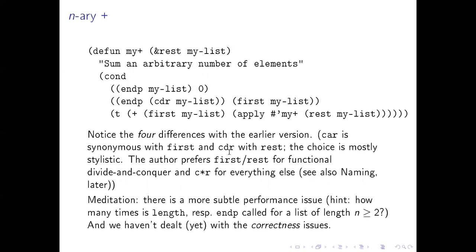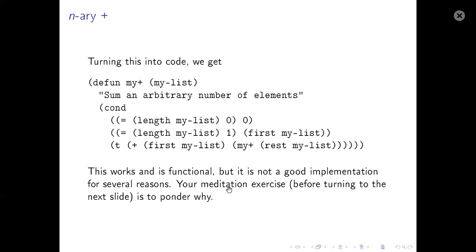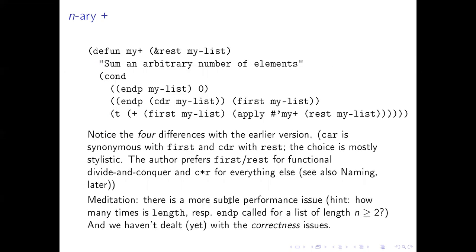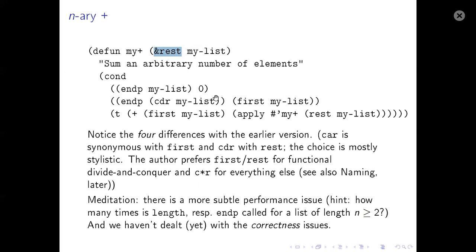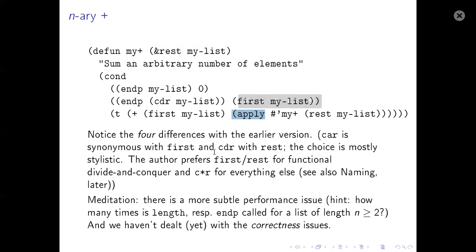Here's a better version. There should be precisely four differences compared to the previous one. You can see there's now &rest up there, and there's an apply here. And more simply, it's using null instead of length. The null check just says: check for the end of the list — if my-list is empty, return zero.